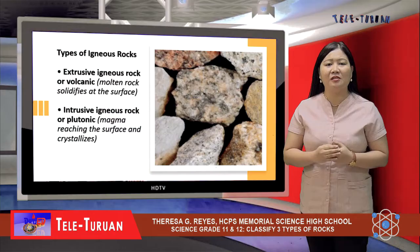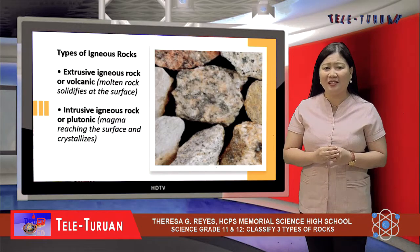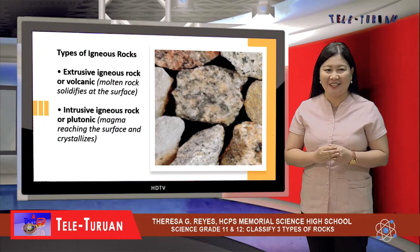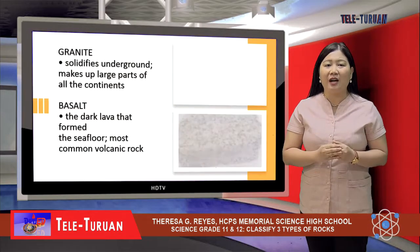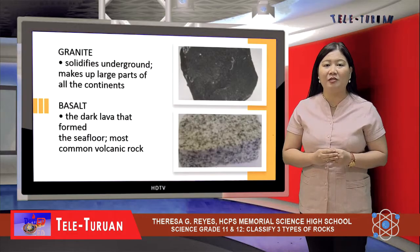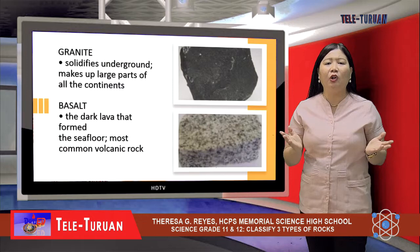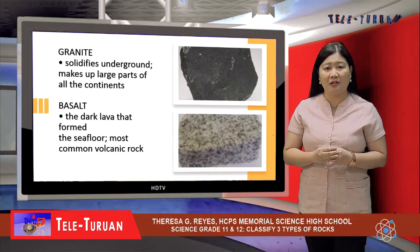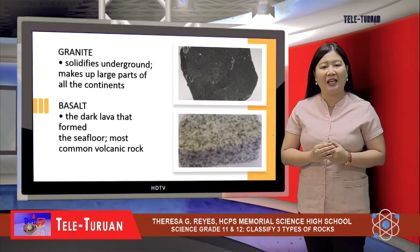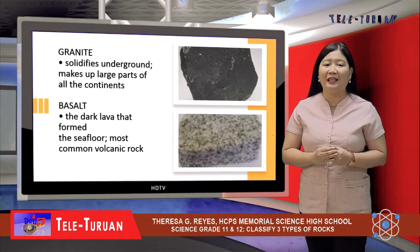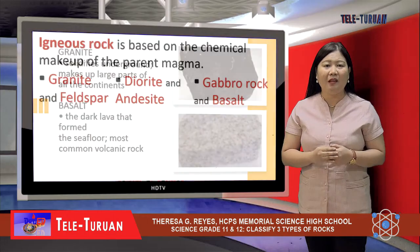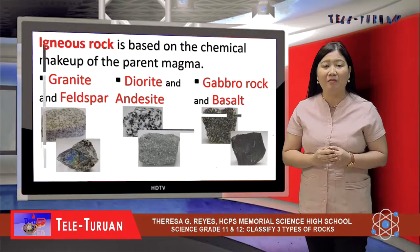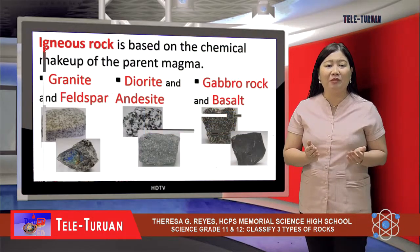However, most magma loses its mobility before reaching the surface and crystallizes, and it is called intrusive igneous rock or plutonic. A rock like granite, formed by magma that solidifies far underground, makes up large parts of all the continents, whereas the seafloor is formed of a dark lava called basalt, which is the most common volcanic rock. Basalt is also found in volcanic lava flows. Igneous rock's mineral composition is based on the chemical makeup of the parent magma. According to light and dark colored materials: